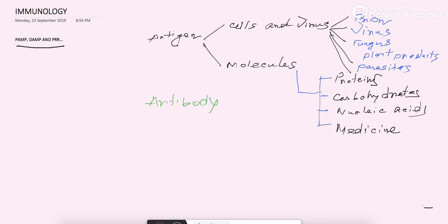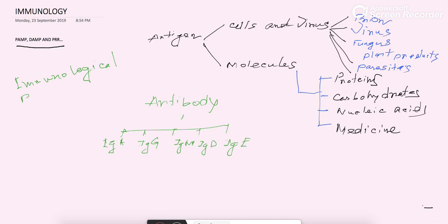So antigen is the main part, and to capture antigen we have created antibodies in our body. The reaction between antigen and antibody is called an immunological reaction. There are two types of immunological reactions in our body. We have already discussed the five types of antibodies: IgA, IgG, IgM, IgD, and IgE. There are mainly two types of immunological reactions.